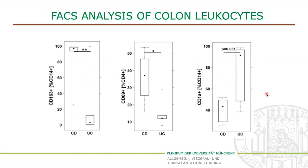We repeated the FACS analysis for cells of the colon. As we didn't get enough leucocytes out of one colon, we had to pool cells and analyze group-wise, not each mouse individually. Because we didn't see a major difference between the control and the challenge group, we decided to show only the challenge groups. Like for the spleen, we again saw higher levels of CD14/CD163 positive monocytes in the NSG-CD mice. The same applies for activated T cells, so CD4 positive, CD69 positive cells. The only cell type whose frequency was significantly higher in NSG-UC mice were CD14/CD1A positive cells. So again, we have this difference between CD and UC.